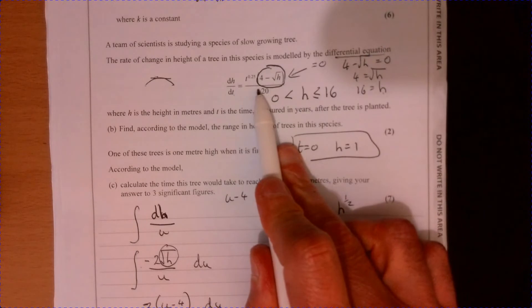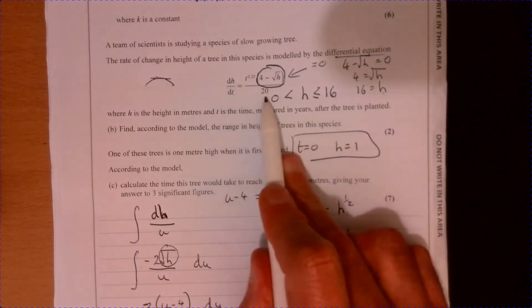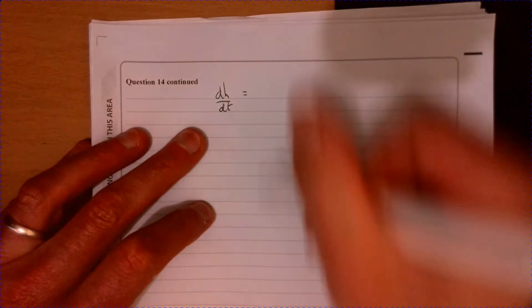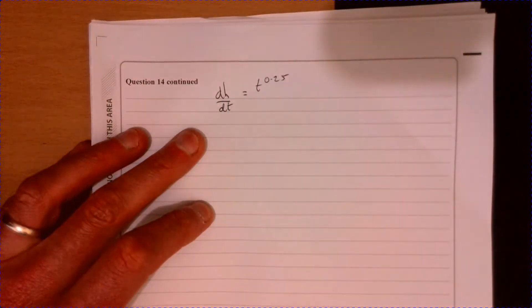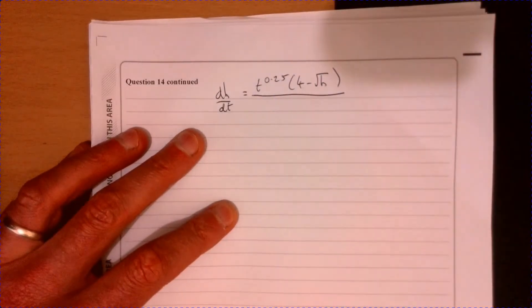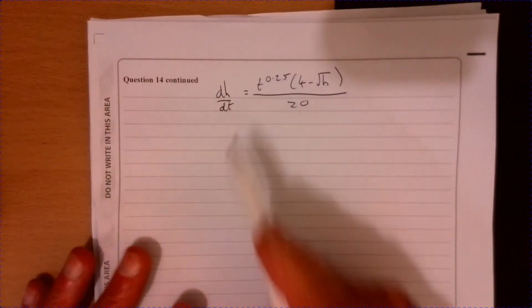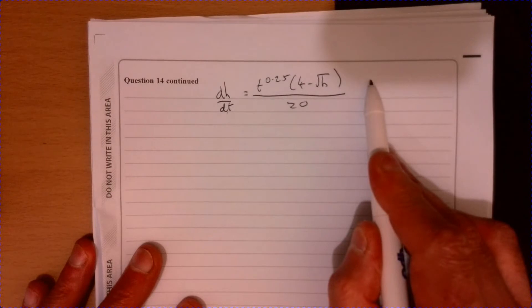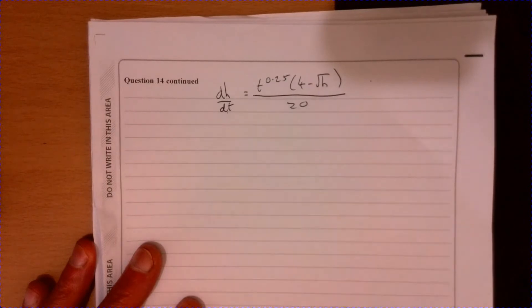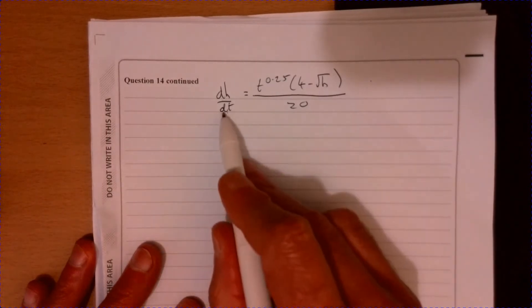We're going to need to focus on this over here. So let's just rewrite this. Let's just write it out again, just so you can see that there. What did we have? We had t to the 0.25 and then it was 4 minus root h over 20. So by differential equation, the dt is going to come over here. Anything that's h is going to go this way, any t's are going to stay over on this side.